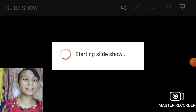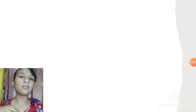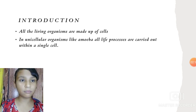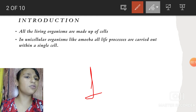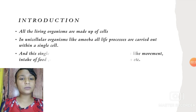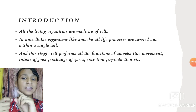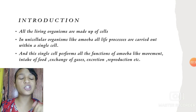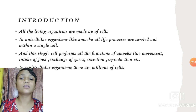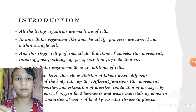All plants, animals, and organisms are made up of cells. In a unicellular organism, only one cell performs all the functions needed by that organism, like amoeba. In multicellular organisms we can see division of labor, where different cells perform different functions.